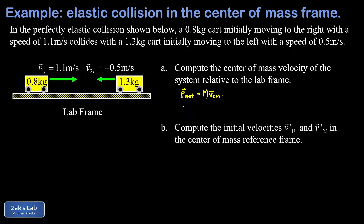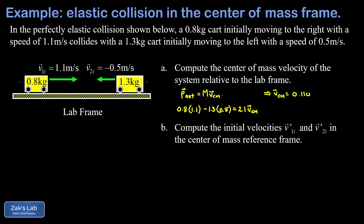We plug in our numbers using the convention that rightward velocity is positive and leftward is negative. The 0.8 kilogram cart moving right contributes 0.8 times 1.1, and the 1.3 kilogram cart moving left contributes a negative 1.3 times 0.5. The total mass is 2.1 kilograms. Dividing the left-hand side by 2.1, we arrive at a center of mass velocity of 0.110 meters per second, keeping three digits of precision.